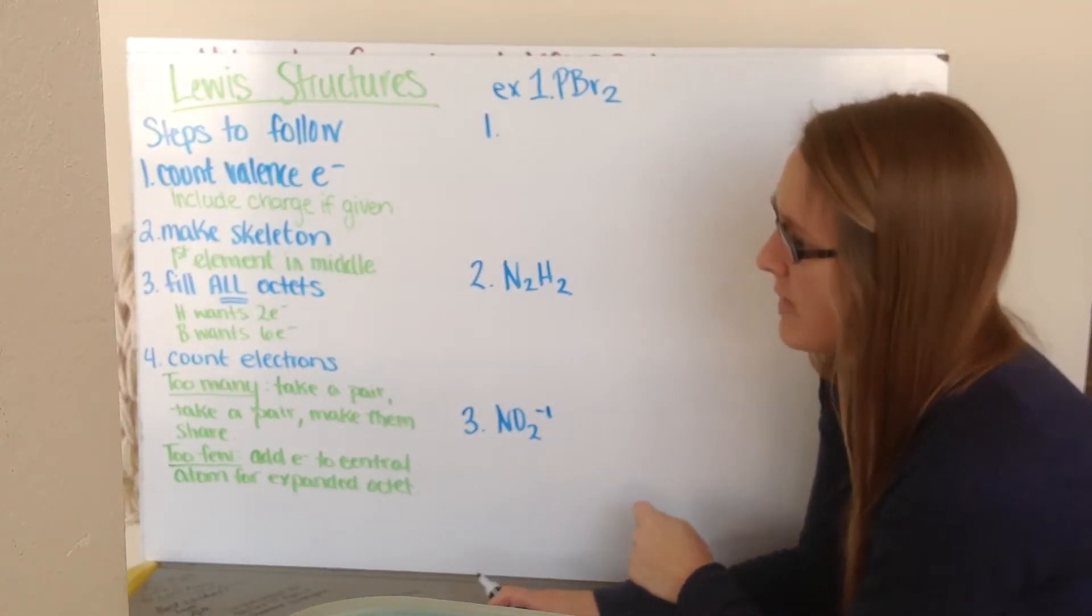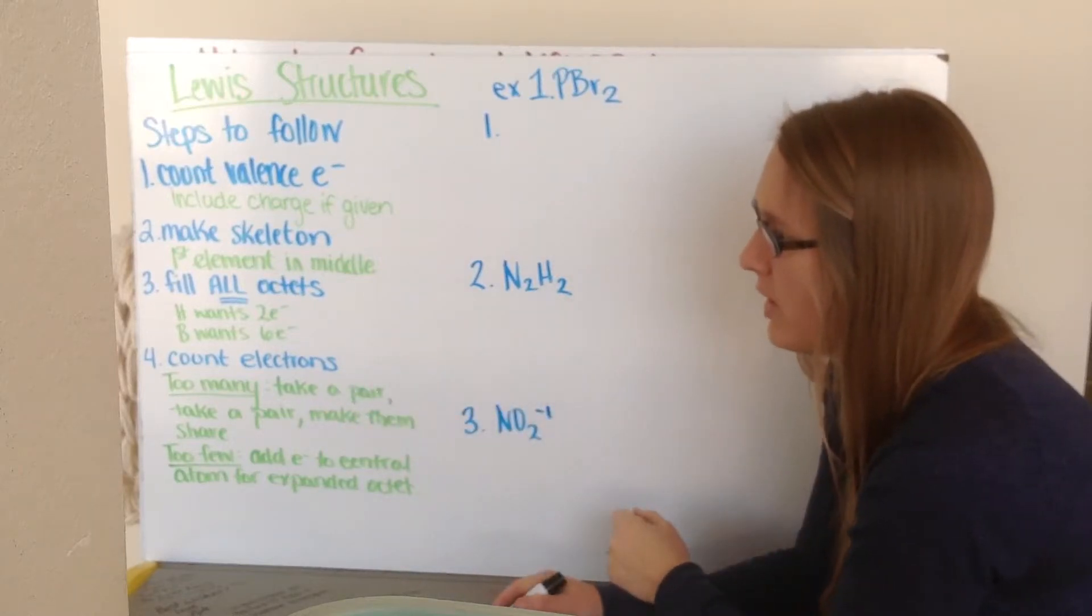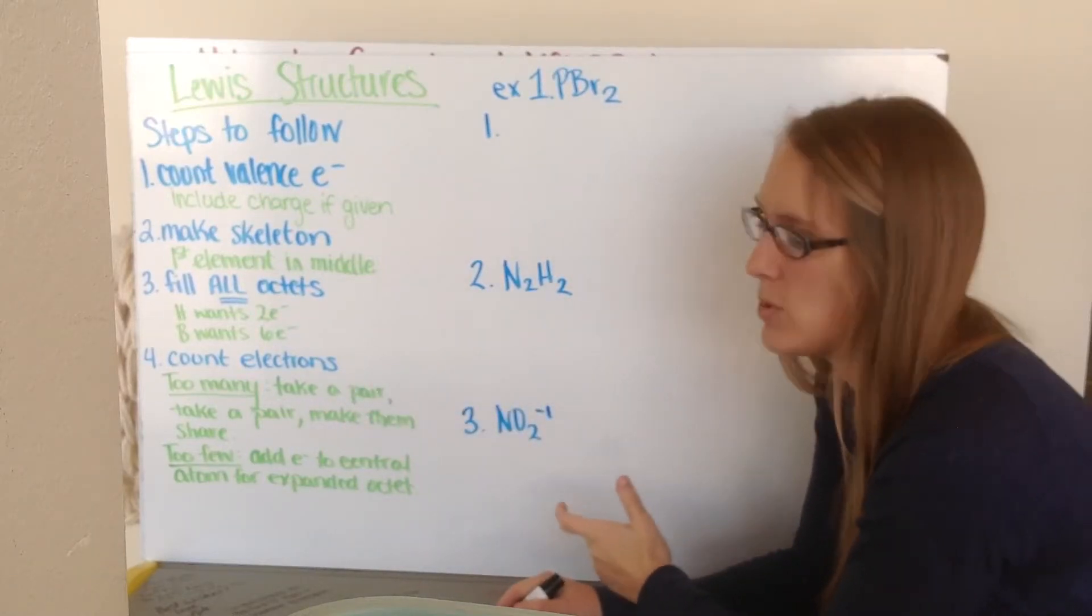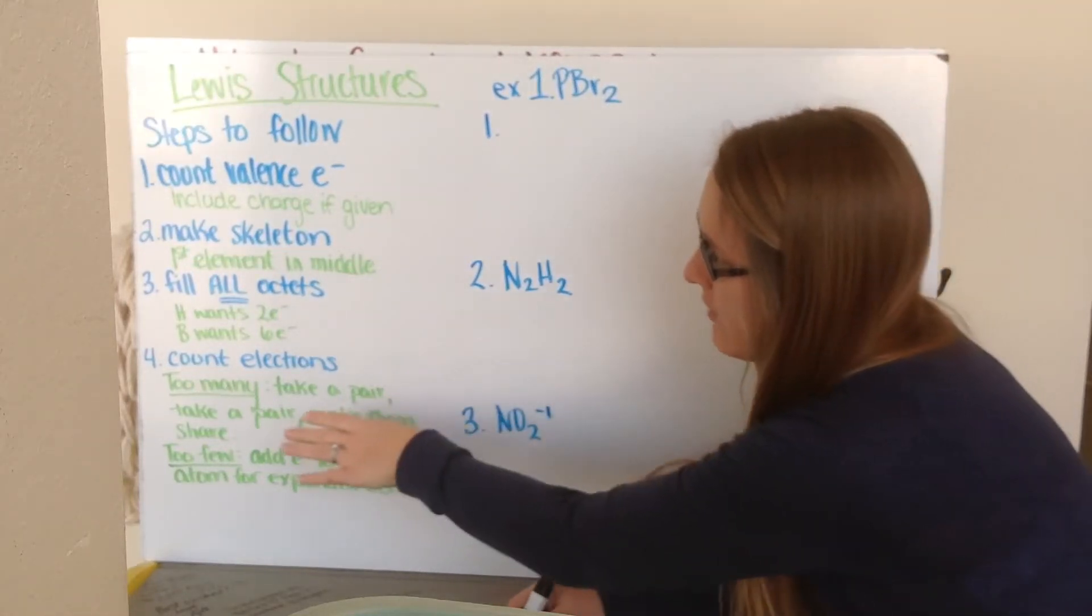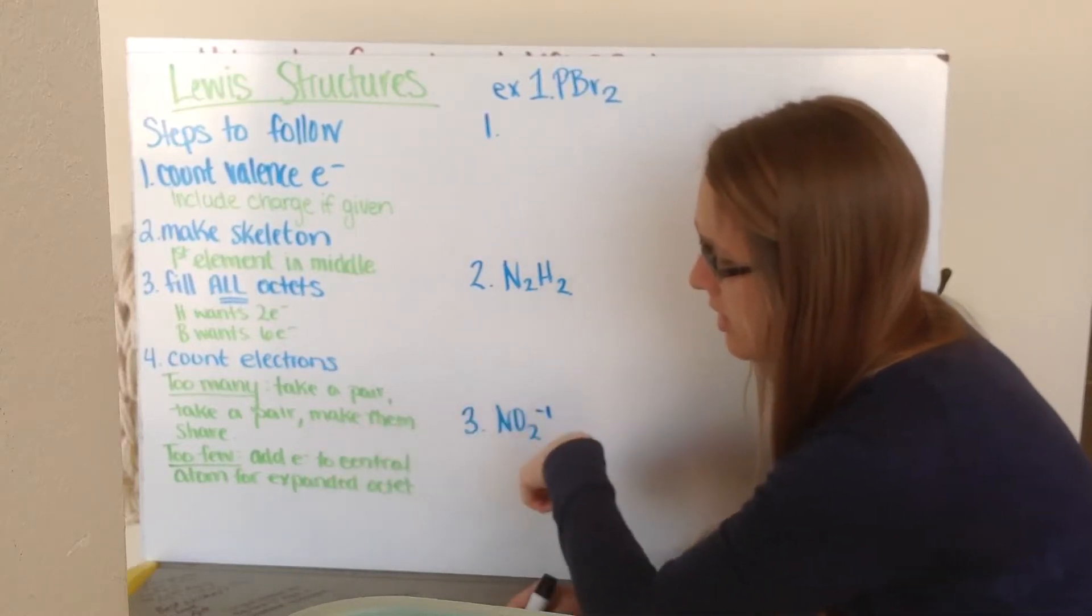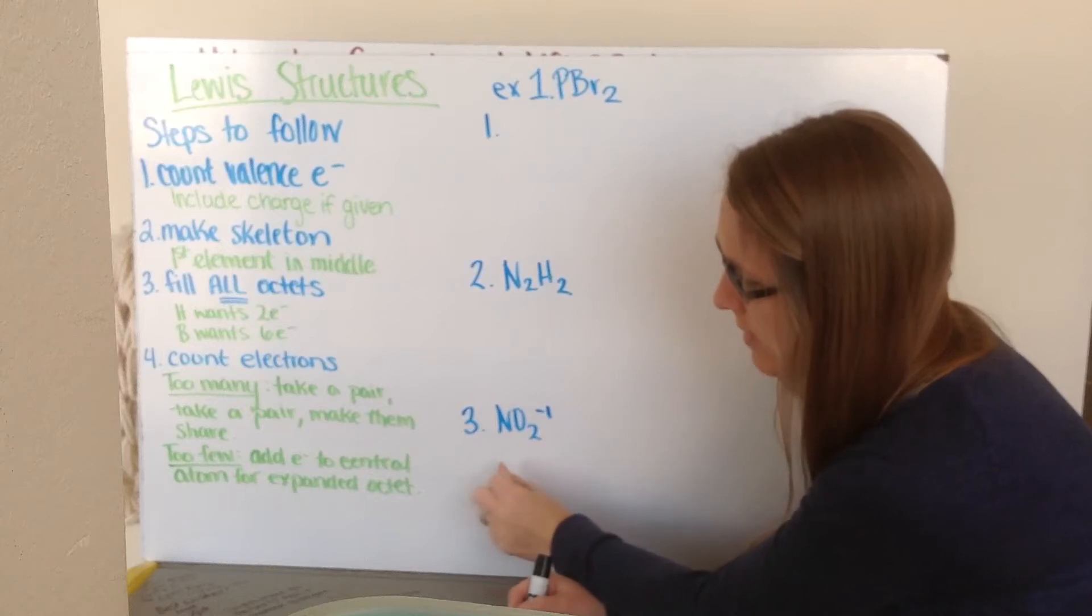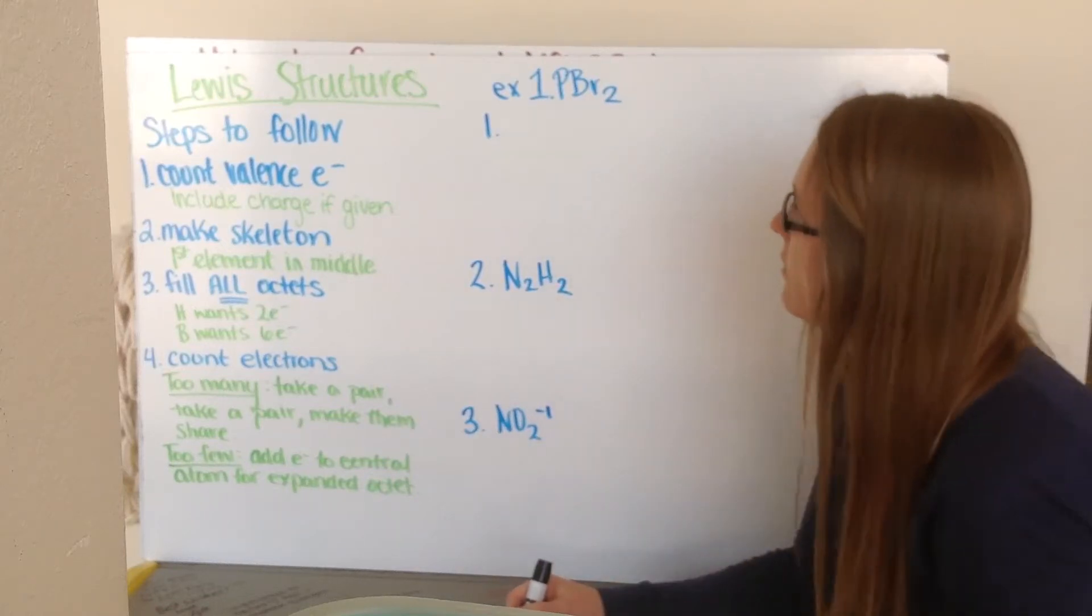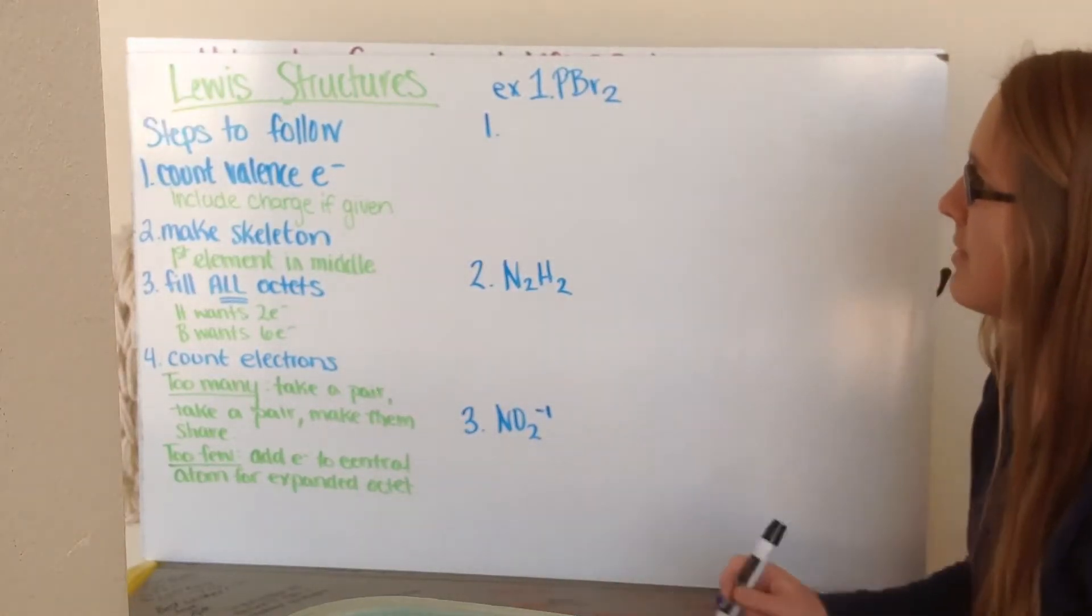After we've filled everybody's octets, we're going to go ahead and count the number of electrons that we have, knowing that if we have a bond between them that's sharing electrons, and we'll get into that in a minute. If there are too many electrons that we count, we're going to take a pair, take a pair, and make them share. And if there's too few electrons, we're going to add electrons to our central atom for an expanded octet, if necessary. So these rules will make a little bit more sense as we go through some examples.